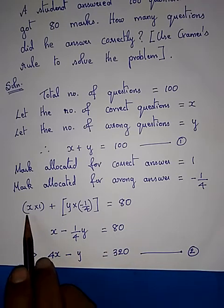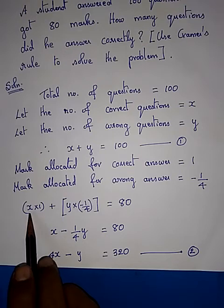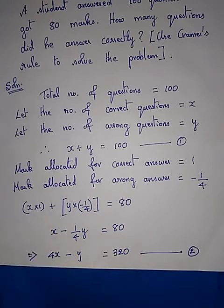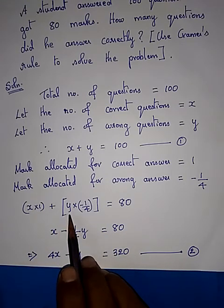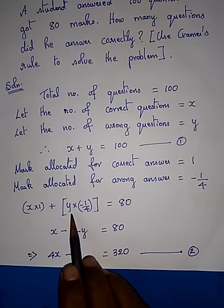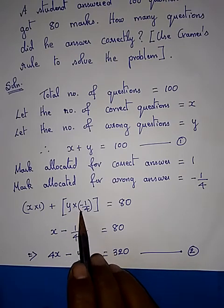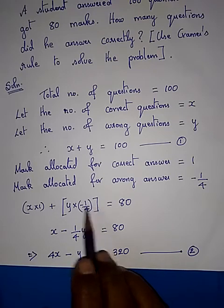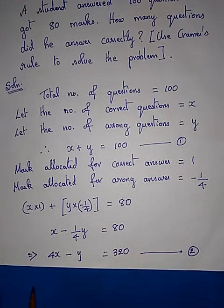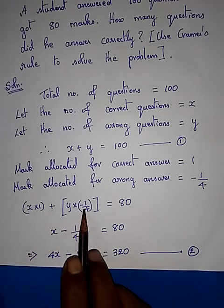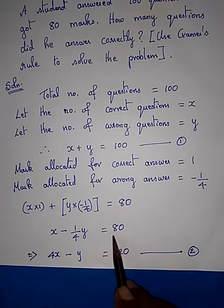We have assumed he answered X questions correctly, so we award 1 mark each, giving X into 1. He answered Y questions wrong, so we deduct minus one-quarter for each wrong answer, giving Y into minus one-quarter. Put together, his overall score is 80. That is: X − (1/4)Y = 80. This is the second equation.